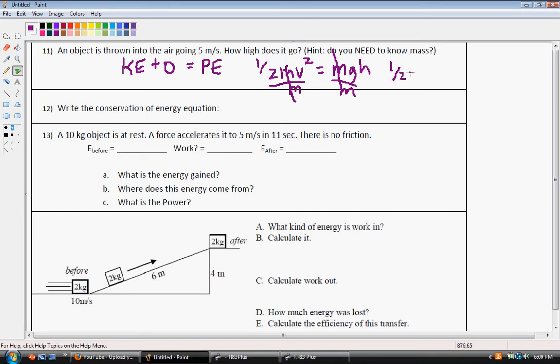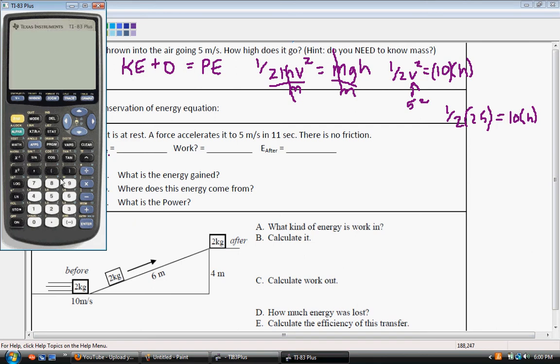So, 1 half v squared equals 10 times our height, actually our height is what we're trying to figure out, and our v squared is 5 squared, because you know it leaves the ground going 5 meters per second. So, 5 squared is 25, so we end up with 1 half of 25 equals 10 times the height. Well, half of 25, let's go ahead and plug it in, it's 12.5, so we'll go ahead and do that on the calculator.